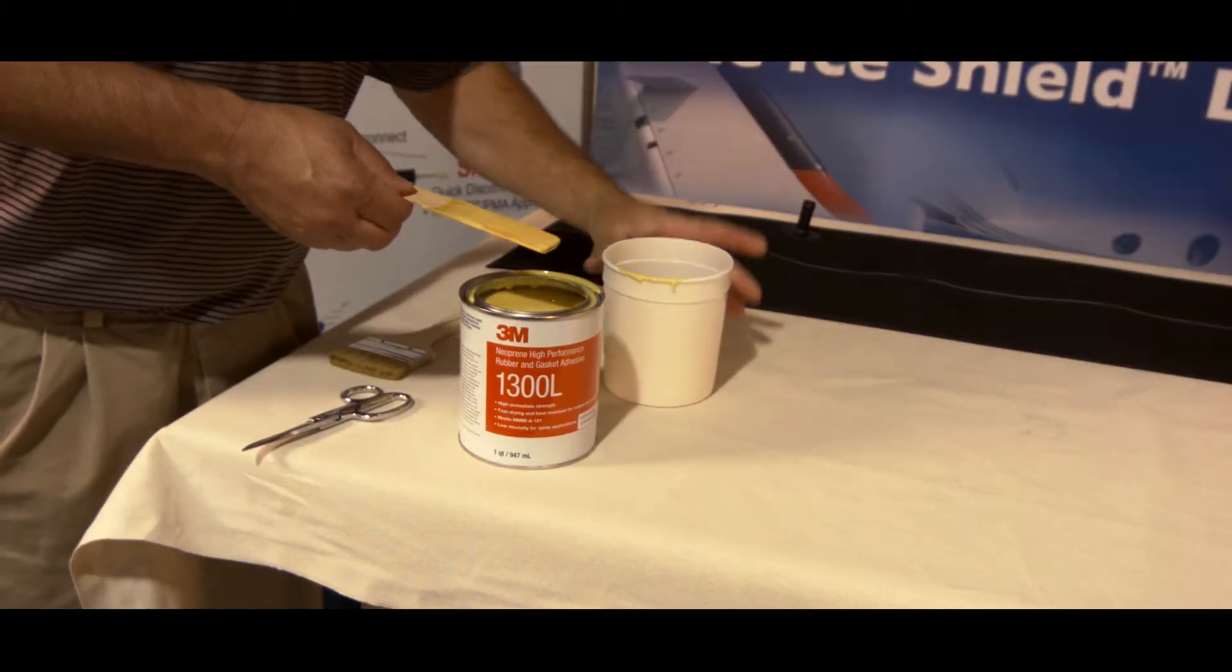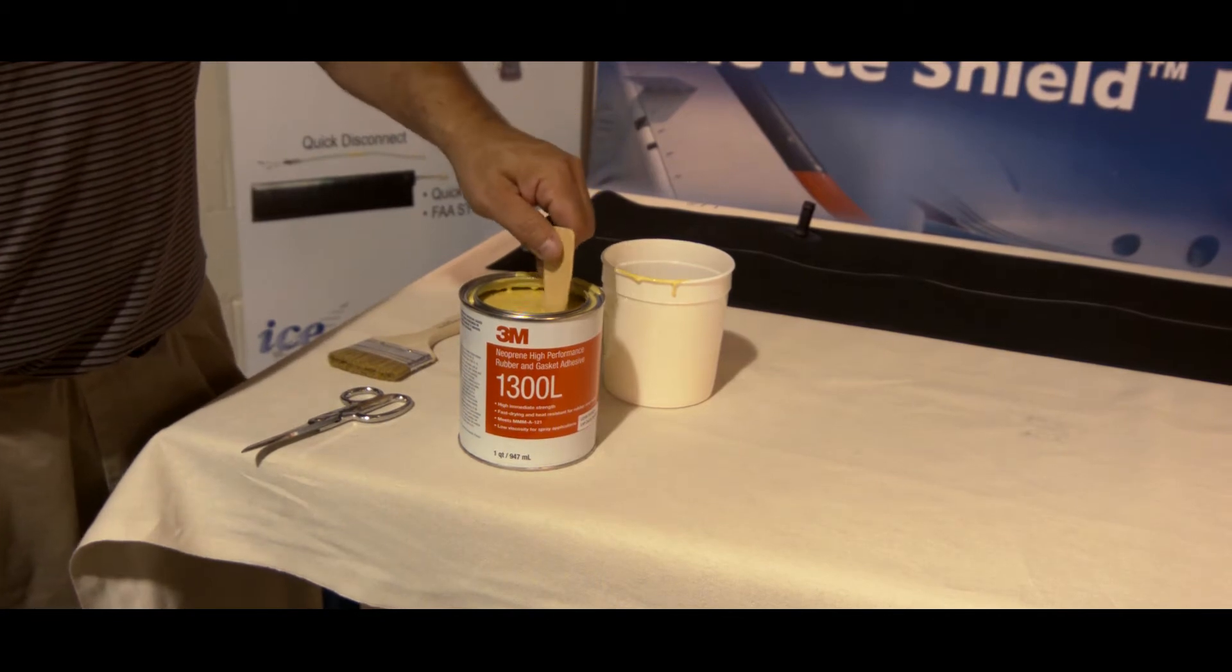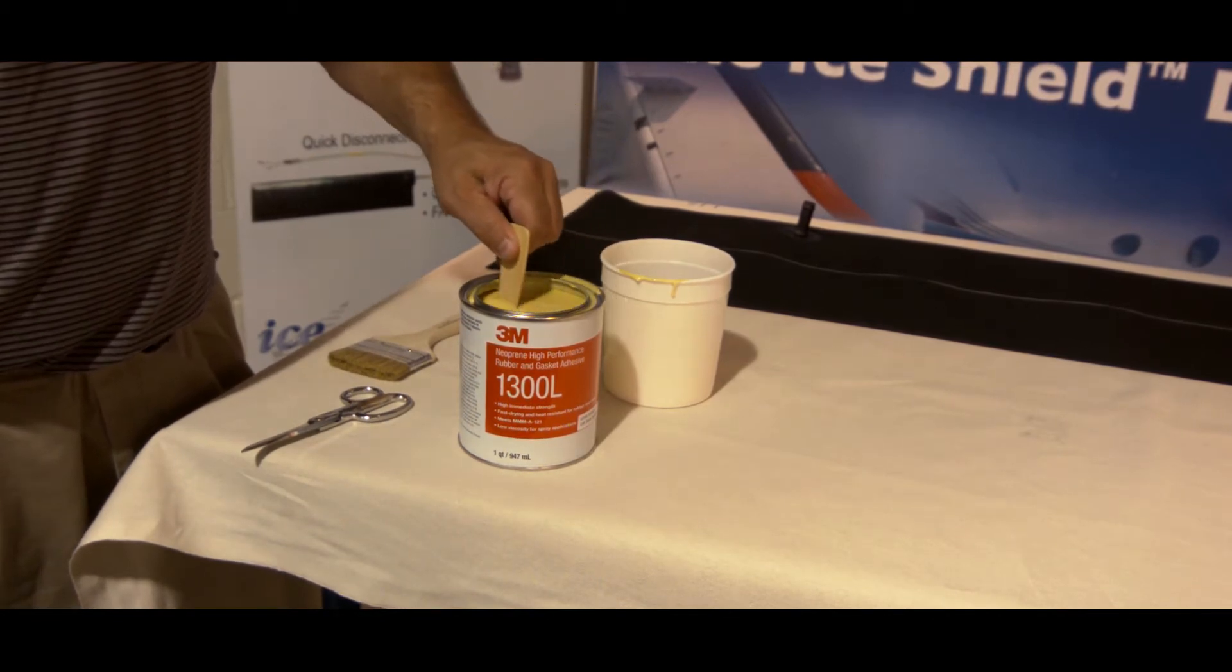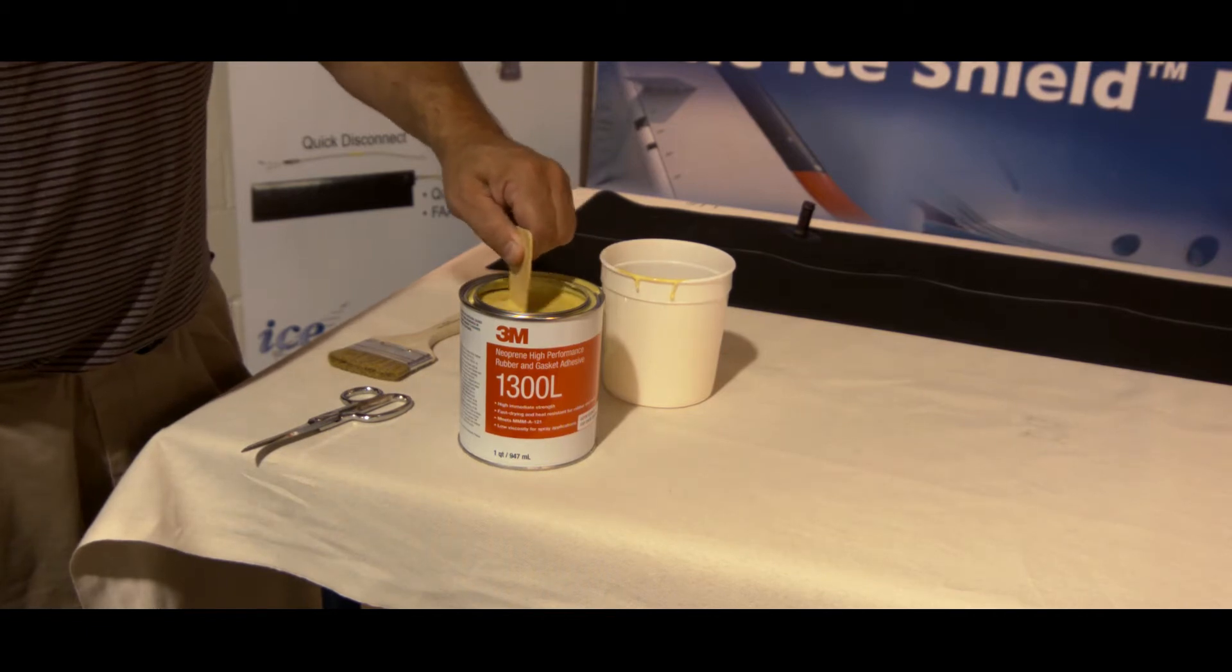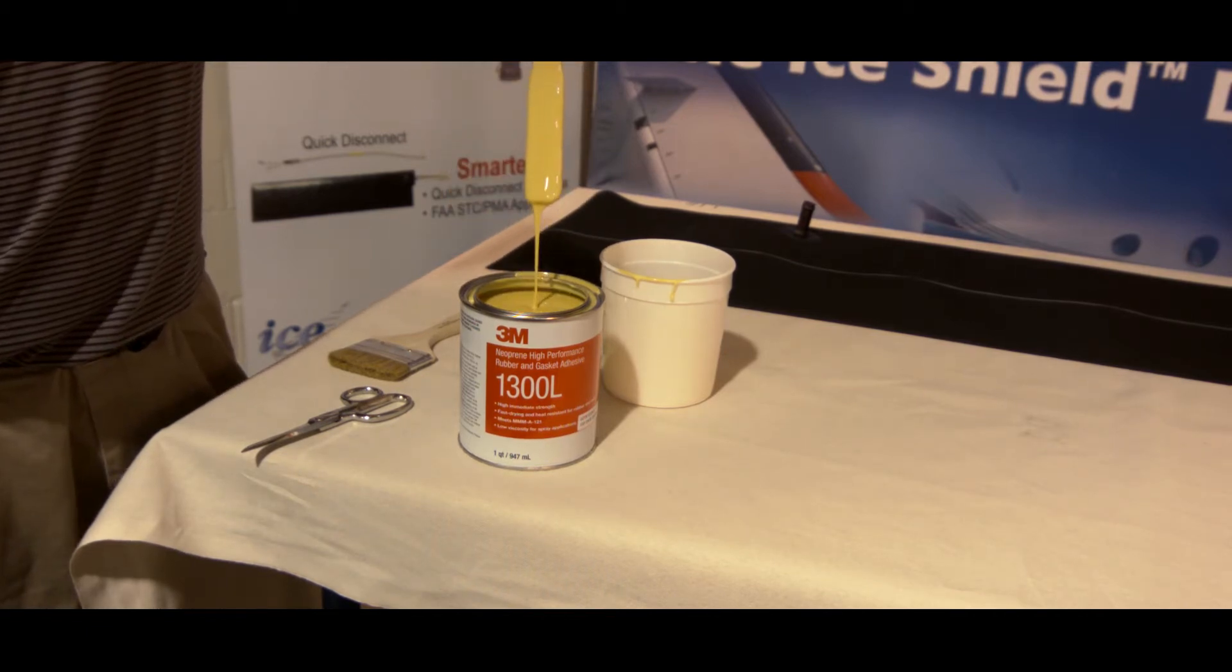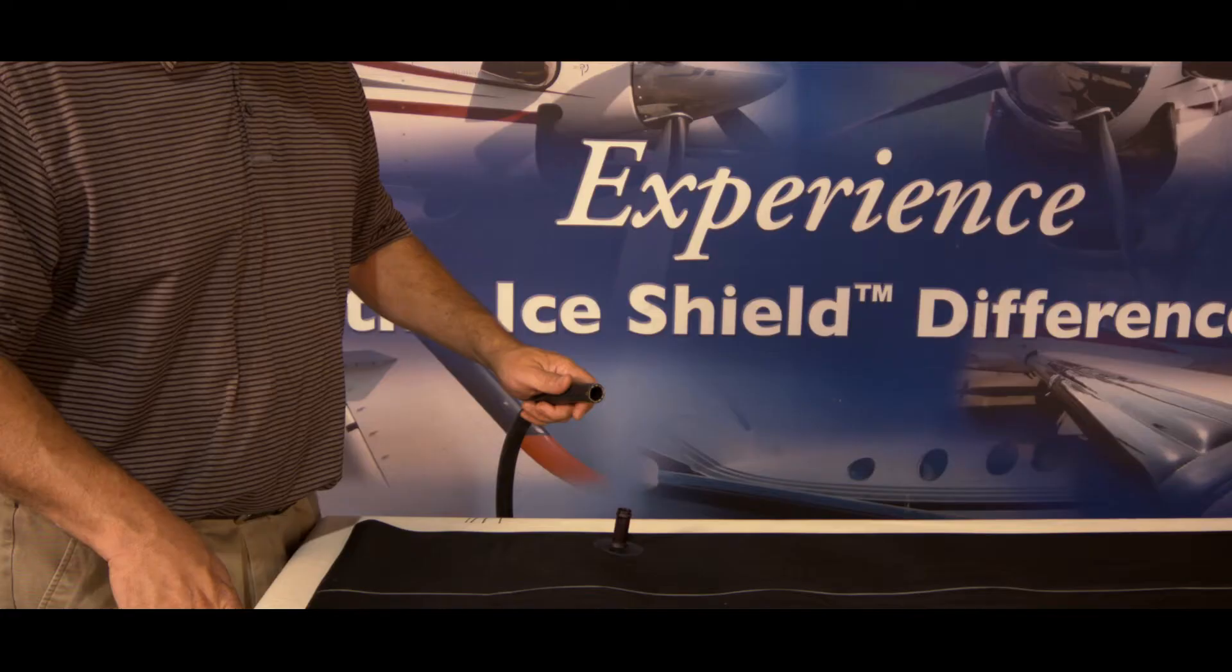Using the supplied stir stick, mix the 1300L adhesive thoroughly to ensure there are no clumps at the bottom of the container. The 1300L adhesive must be completely mixed before use and must not be thinned.